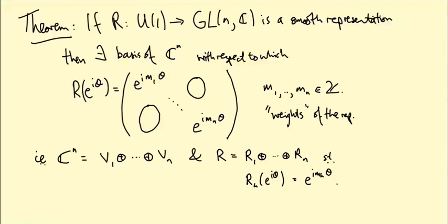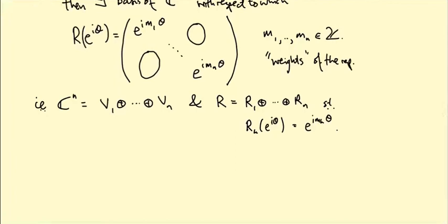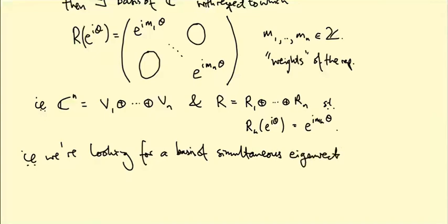And actually, it's an eigenvector with that eigenvalue for all theta. So it's a simultaneous eigenvector of R(e^{iθ}) for all theta. I.e., we're looking for a basis of so-called simultaneous eigenvectors—vectors which are eigenvectors of R(e^{iθ}) for all theta.